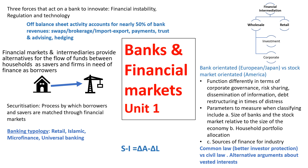Starting with banks and financial markets, in terms of financial intermediation, as most people know there are two types of banks: wholesale and retail banks, and under wholesale there are investment and corporate banks. Financial markets and intermediaries provide alternatives for the flow of funds between households as savers and firms in need of finance as borrowers, and securitisation is the process by which borrowers and savers are matched through financial markets.